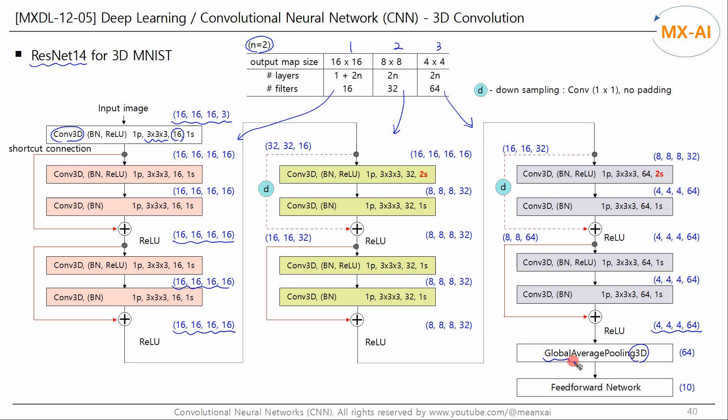The final output dimensions are 4x4x4x64. And then we do 3D global average pooling. Finally, the feedforward network classifies the input image into 10 categories. Excluding the global average pooling layer, there are a total of 14 layers with trainable parameters, represented by squares. This is the ResNet-14 model for 3D MNIST image classification.